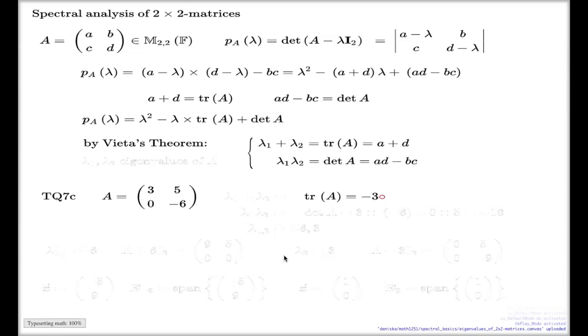The trace of this matrix is -3, sum of the elements in the diagonal. Determinant of this matrix is -18 take 0, which is -18.